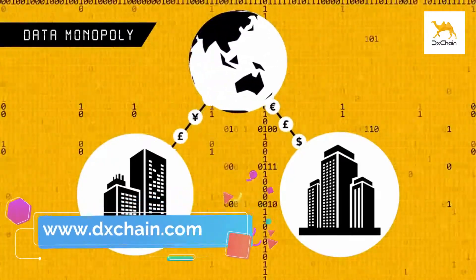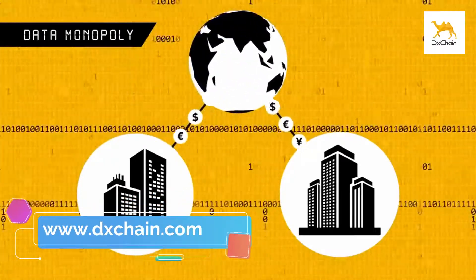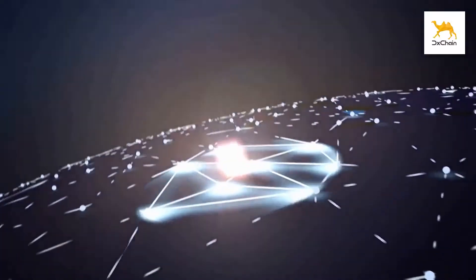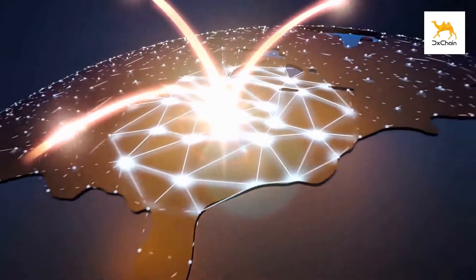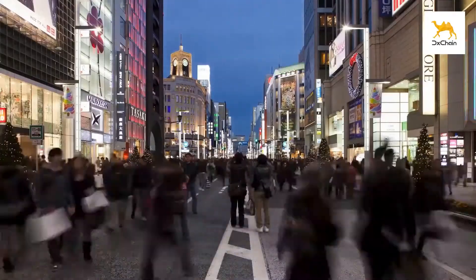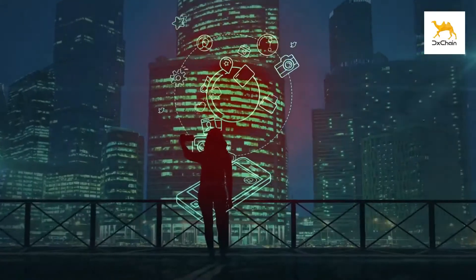DX Chain's key features enable any computational task to be performed securely while minimizing the number of network node computations required and allows the network to verify the accuracy of computation results. This is used by the computation chain to verify the authenticity of results and reduces the prevalence of false information.